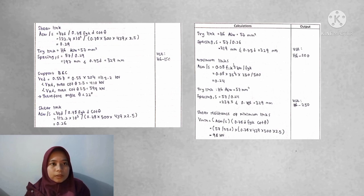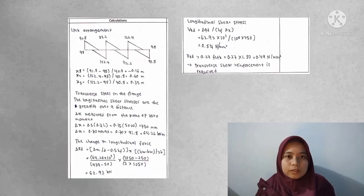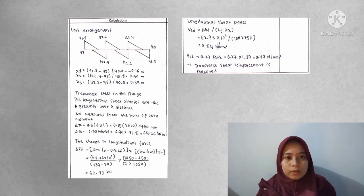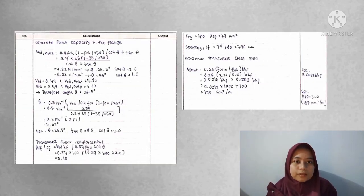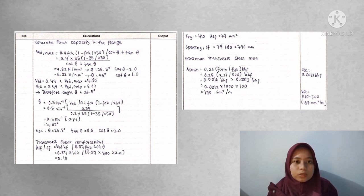Shear resistance at minimum length is 68 kN. For link arrangement, VED is 62.93 kN, BD is 0.49 N/mm². Therefore, shear reinforcement is required. For concrete strut capacity, AS min is 130 mm² per metre. We use H10-500.